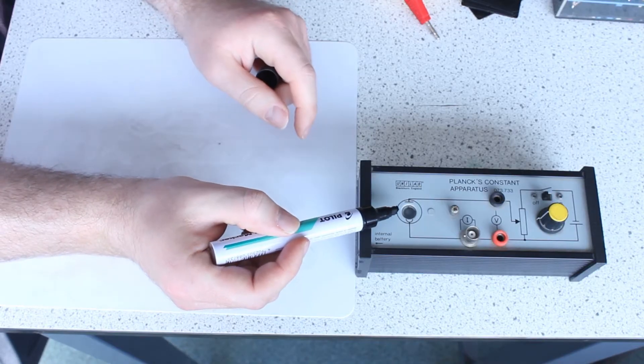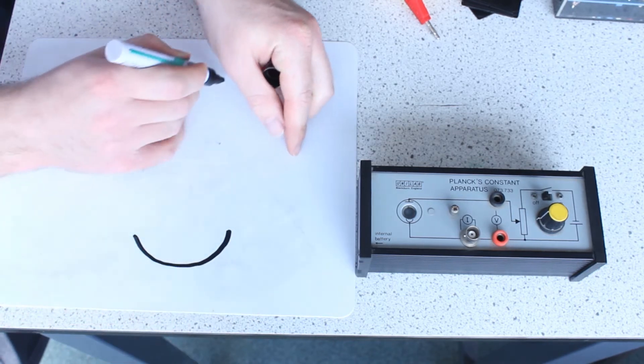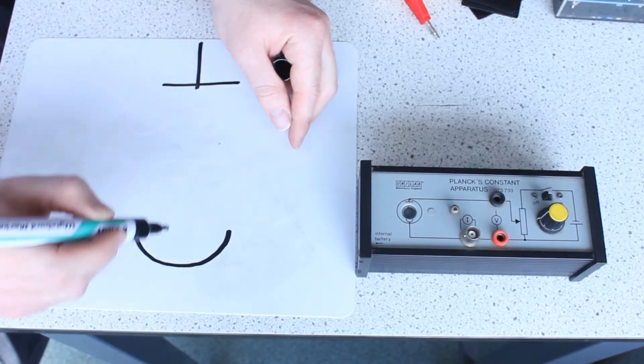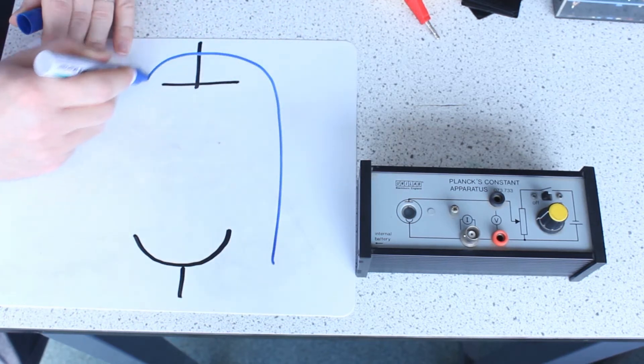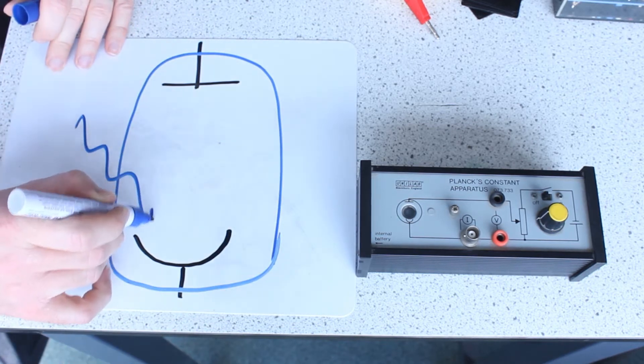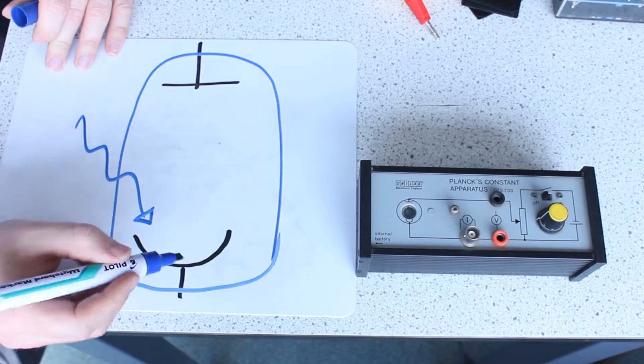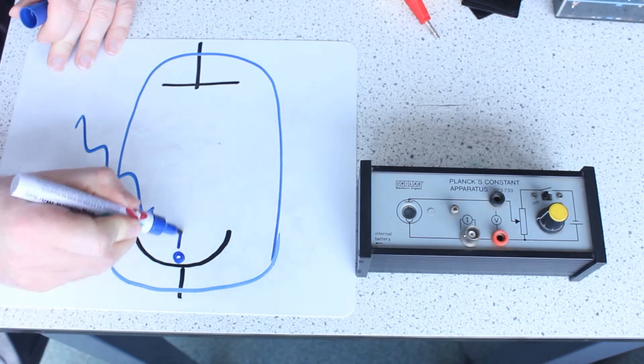So this is my photocell just here. This is the cathode and this is the anode. It's in a vacuum so there's no other particles in there to get in our way. Light is going to shine onto this cathode here and if it's above the threshold frequency then we're going to release photoelectrons.